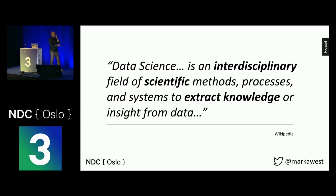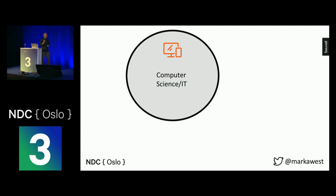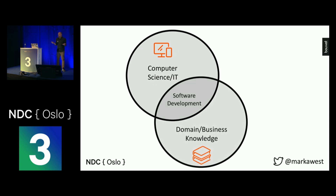This definition from Wikipedia is pretty good: data science is an interdisciplinary field of scientific methods, processes and systems to extract knowledge and insight from data. The key word is interdisciplinary. Most people in this room work with computer science and software engineering, which is at the boundary between domain knowledge and computer science. We learn about our customers' and employees' domains and write code that reflects that business knowledge using our computer science skills.